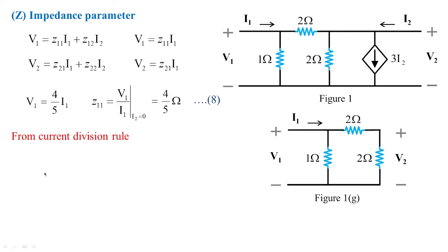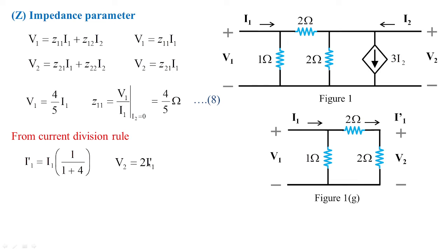From the current division rule, I1 dash is the current flowing in the 4-ohm branch (2 ohms in series with 2 ohms), where 1 and 4 are in parallel. I1 dash = I1 × 1/(1+4) = I1/5. Then V2 = 2×I1 dash = 2I1/5. Therefore z21 = V2/I1 at I2 = 0, whose value is 2/5 ohms, treating this as equation 9.